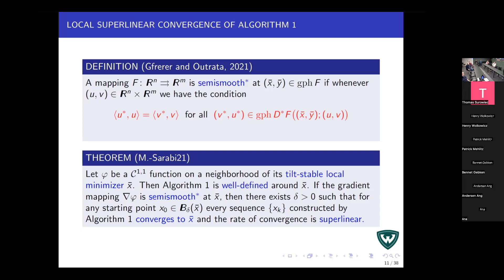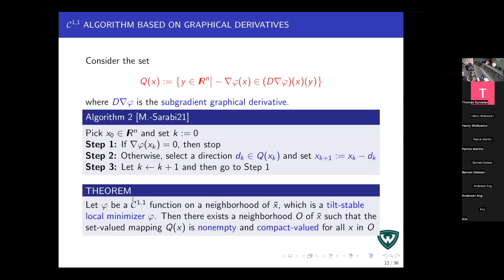There is also another approach using the subgradient graphical derivative — a primal-dual construction. It is very similar and parallel to the coderivative-based approach, but uses the graphical derivative of the subdifferential mapping. It doesn't have as strong calculus but can sometimes be computed more directly for specific problem classes.